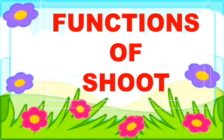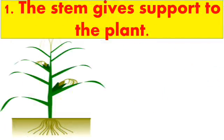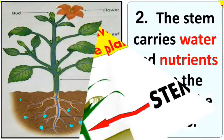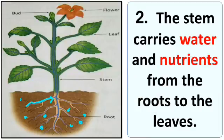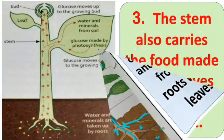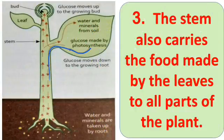Now it is very important to know the functions of the stem. The first function is that the stem gives support to the plant. Next, the stem carries water and nutrients from the roots to the leaves. Third, the stem also carries the food made by the leaves to all parts of the plant. In the next video, we will see how the leaf makes food for the plant.